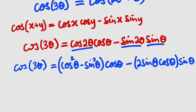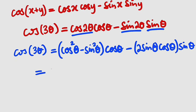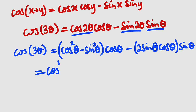Multiplying these out: cosine squared theta minus sine squared theta times cosine theta gives cosine to the power of 3 of theta, minus sine squared theta cosine theta.